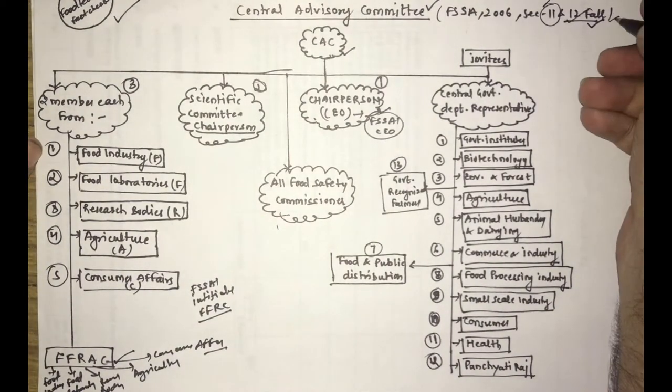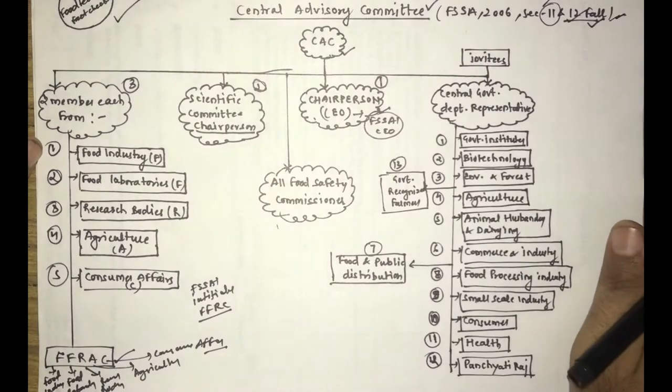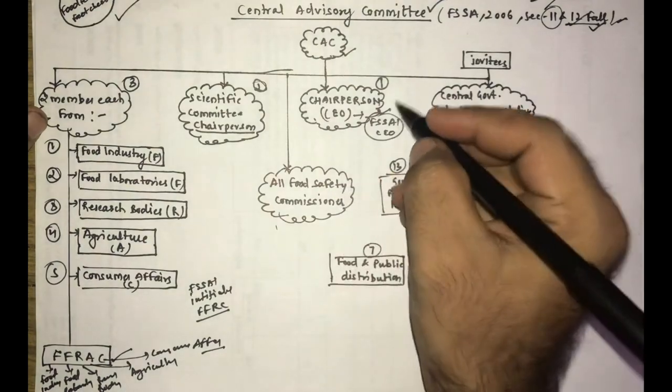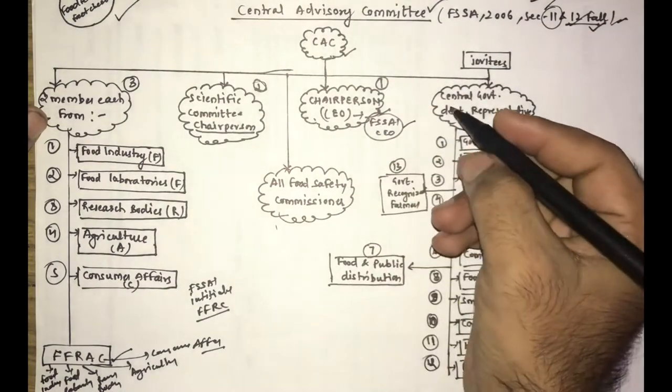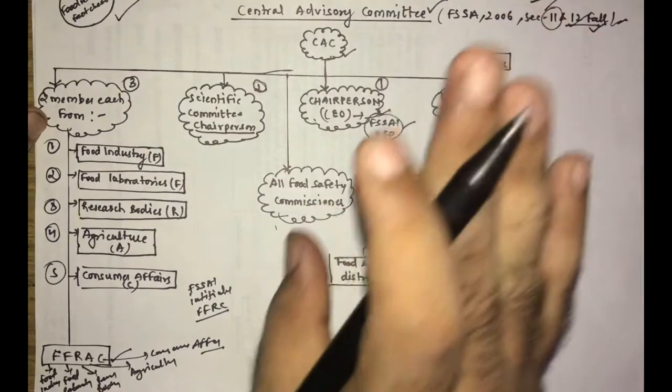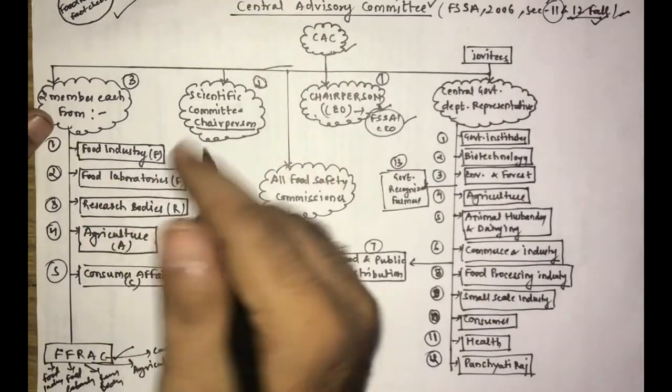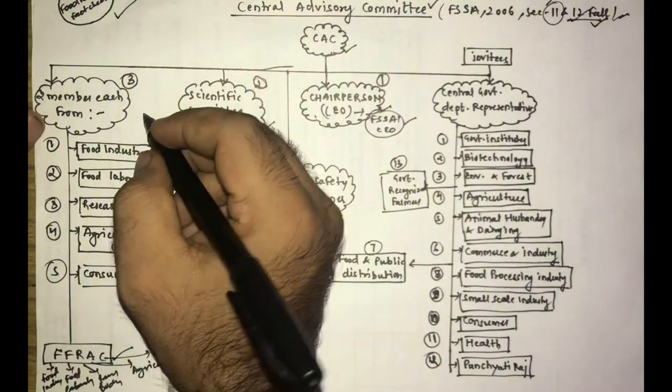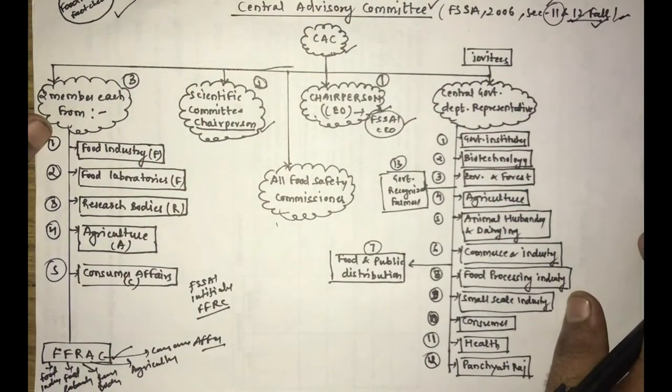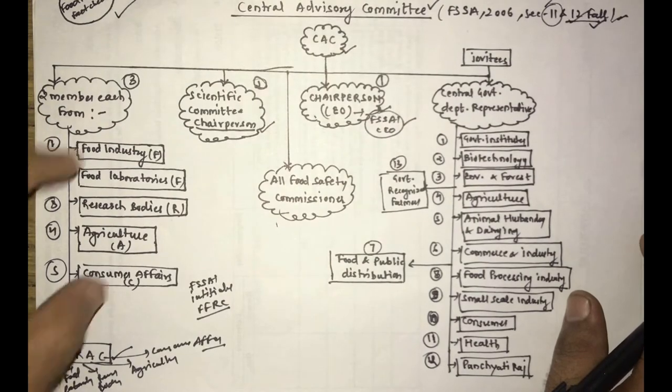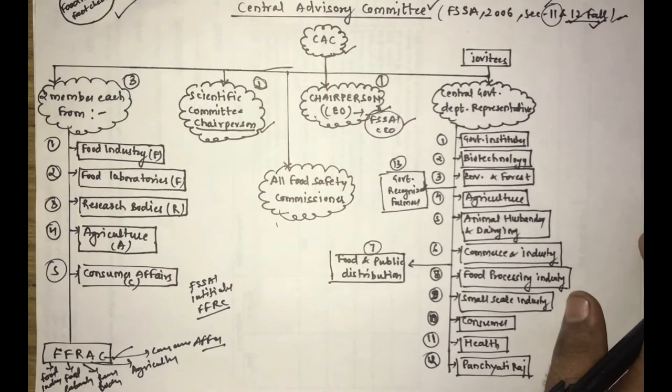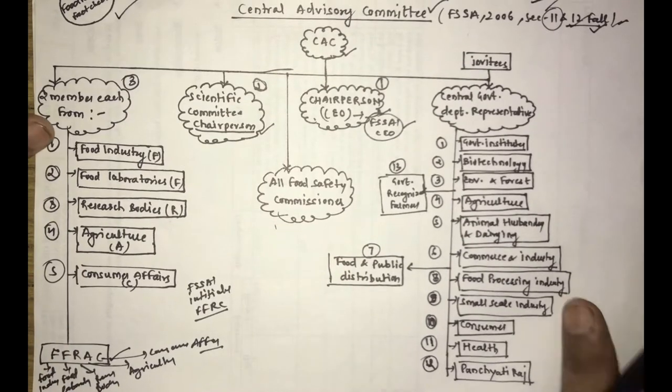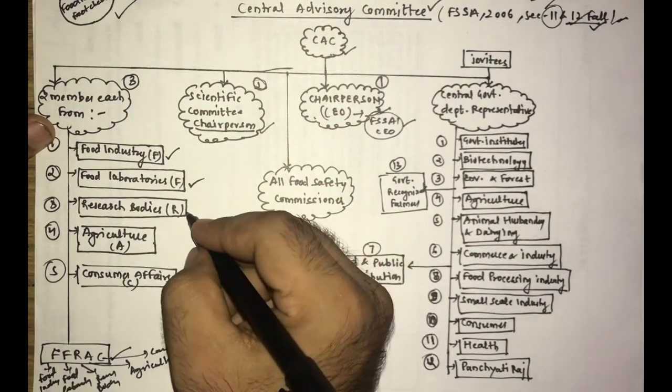The FSSAI CEO will be in the Central Advisory Committee. The second member is the Central Committee chairperson will be the member. The third member is two members from different organizations. The different organizations are five different organizations. What will be the two members from each industry? The first is our Food Industry, the second is Food Laboratory, the third is Research Bodies, the fourth is Agriculture and the fifth is Consumer Affairs.